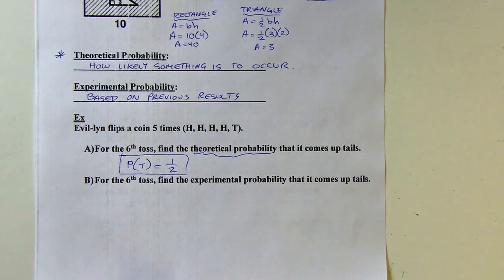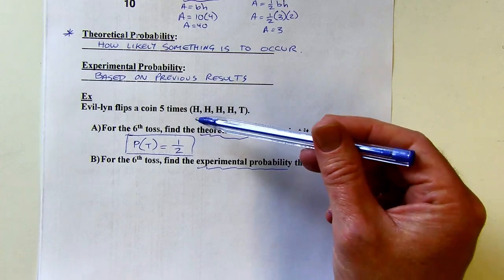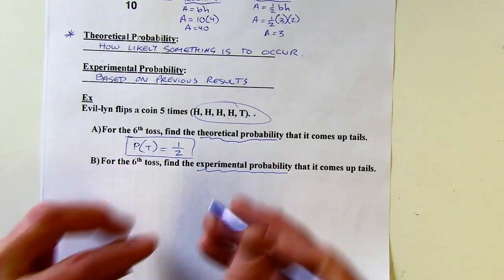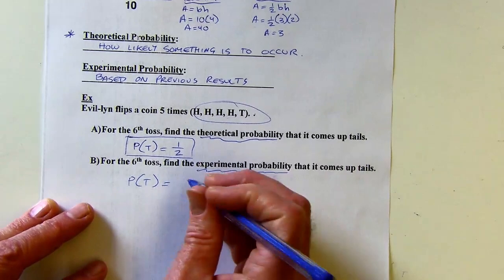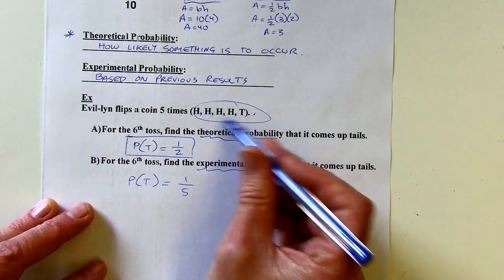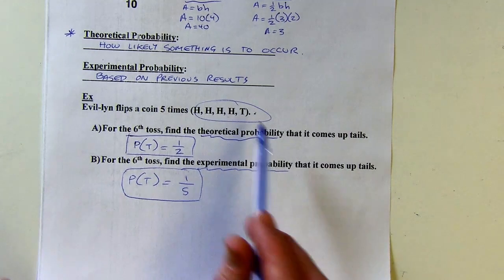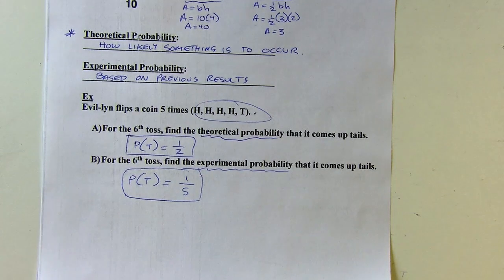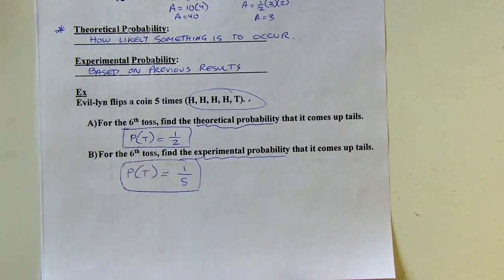Experimental probability is different — it's based on previous results. We're living in a world where this is all we know: heads came up four times and tails once. Looking at favorable over total, there's one favorable tails outcome and five total tosses, so the experimental probability is 1/5. We just assume the pattern repeats. Maybe it was a weighted coin, in which case experimental probability would make more sense. That's it for today — see you next time.